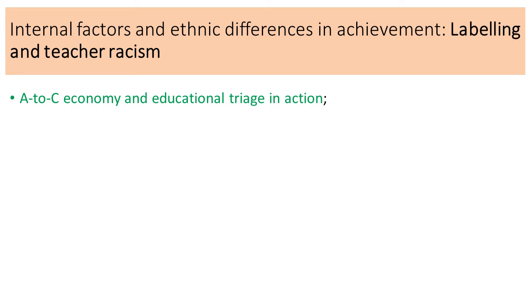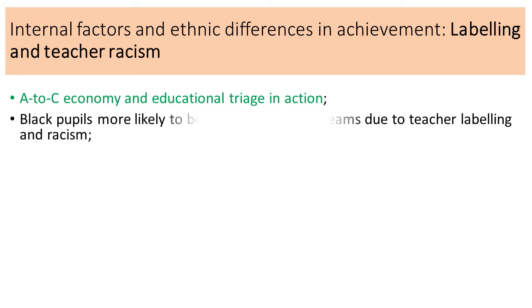There exists an A-to-C economy in our education system. Schools are desperate to get as many GCSE grades C and above, so they focus on students who can get those grades. If you're getting top grades you might be allowed to do your own thing; if you're scoring D or below that causes problems and you'll often be ignored. If you're on the C/D borderline you often get a lot of support - this is what we call educational triage.